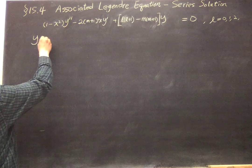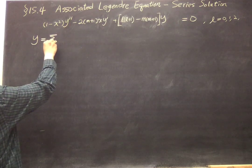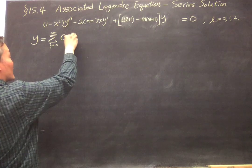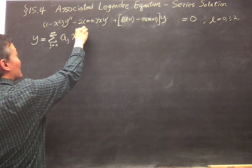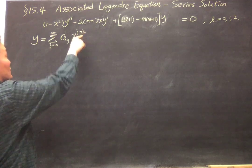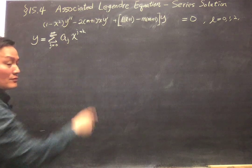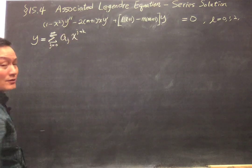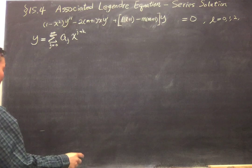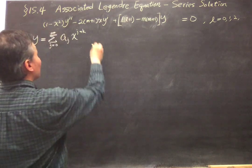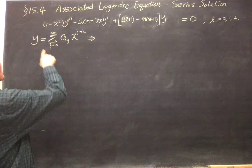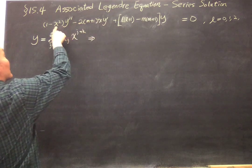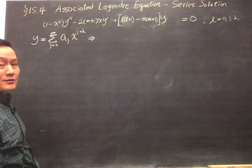So y equals the sum over j from zero to infinity of a_j times x to the power j plus k, where k is a constant whose condition we will determine. We substitute this into the equation to find the recurrence for a_j. We need x times y prime, y double prime, and x squared times y double prime.